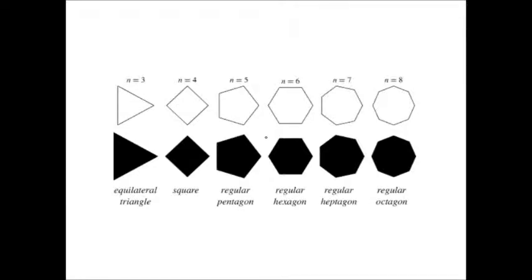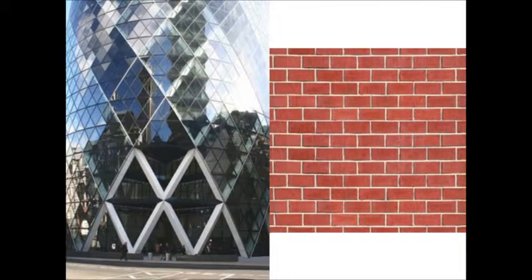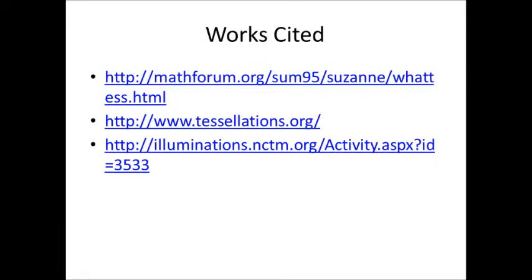In conclusion, tessellations are patterns of congruent shapes that can go on infinitely within a plane without gaps or overlap between shapes. Regular polygons are closed figures with 3 or more sides in which all sides are congruent and all angles are equal. Tessellations of regular polygons are seen in everyday life frequently.